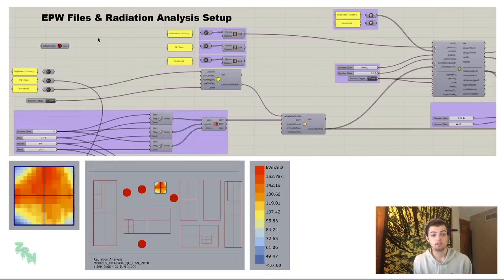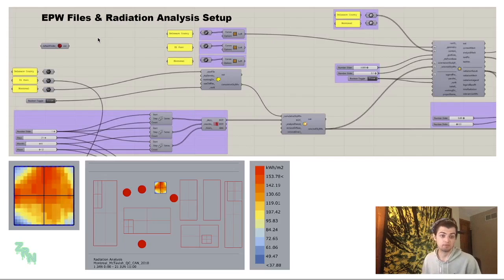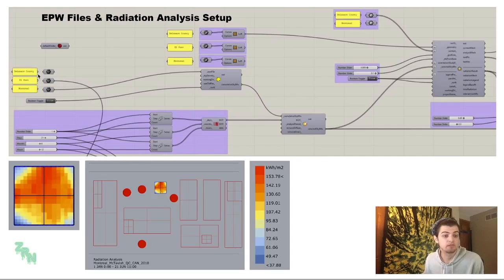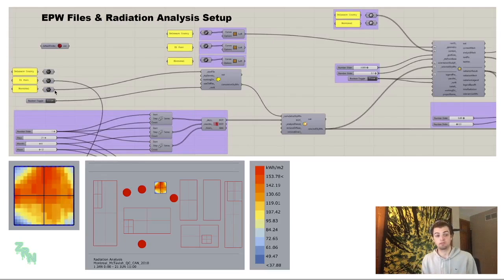Now that we know what EPW files are and where to get them, let's talk about the setup for this Grasshopper definition. On the left hand side there are file paths which are basically placeholders for the EPW files that sit inside my own file folders. I set them up in this arrangement so that I can connect them to my sky matrix and other components easily without having to restructure them.